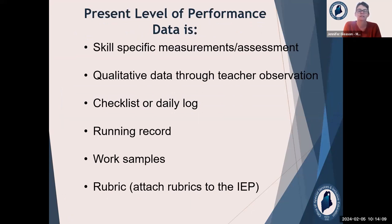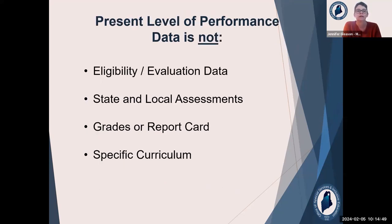What kind of data? You can use skill-specific measurements or assessments, qualitative data through observation, checklist, daily log, running record, work samples. You can use a rubric — if you reference a rubric, you must attach it to the IEP and you must also make sure that it refers to a really specific skill gap. Rubrics can be really vague and can have multiple skills, so really make sure that it's clear what the measurement is and what the skill is. Again, we are not using eligibility evaluation data, state and local assessments, grades, report cards, or specific curriculum.